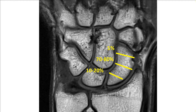Here are the locations of scaphoid fractures. Up to 80% of fractures affect the middle third of the bone, 10-20% are located in the proximal pole, and only 5% are located in the distal pole.